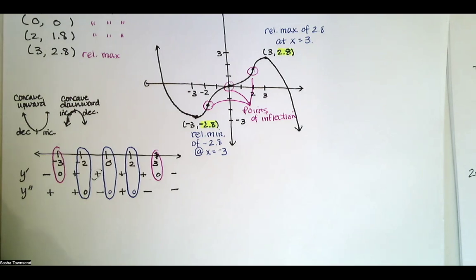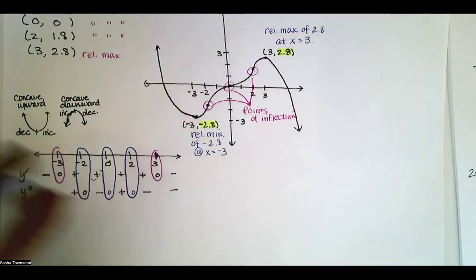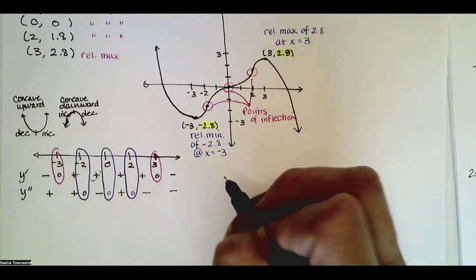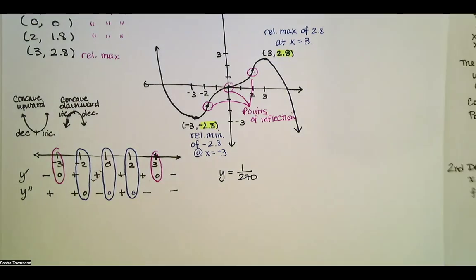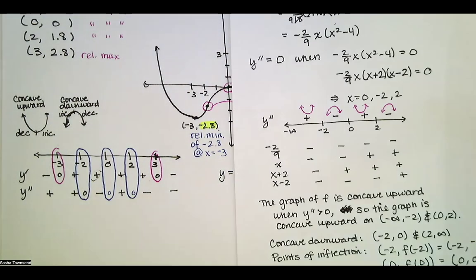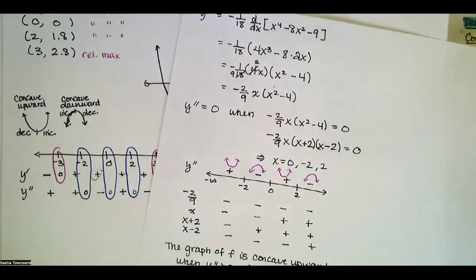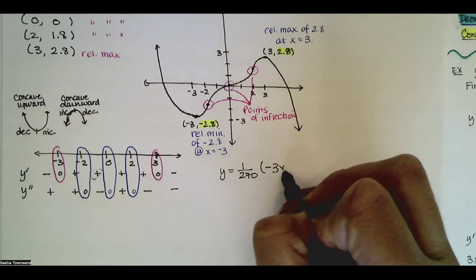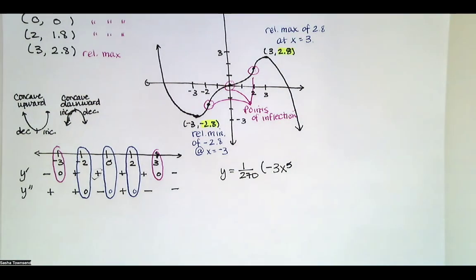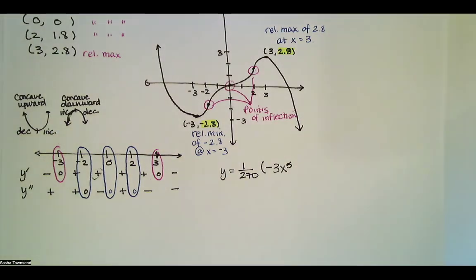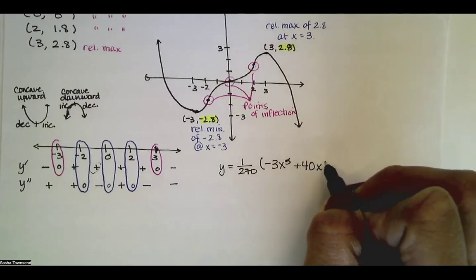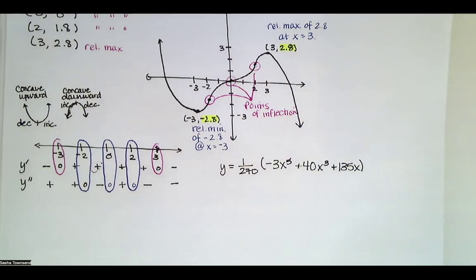The function has a relative min of negative 2.8 at x equals negative three, and a relative max of 2.8 at x equals positive three. That is the graph of the original function, which was y equals 1 divided by 270 times negative 3x to the fifth plus 40x cubed plus 135x. Now let's go to desmos.com and make sure that the graph online is consistent with the graph in our picture.